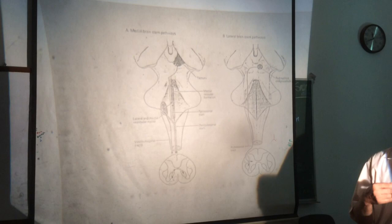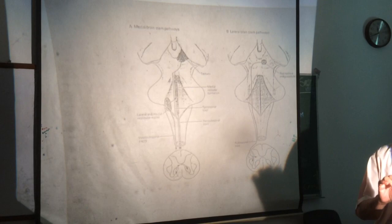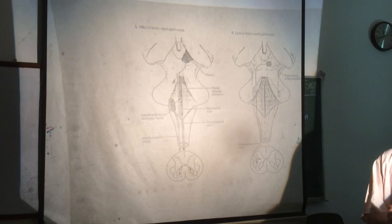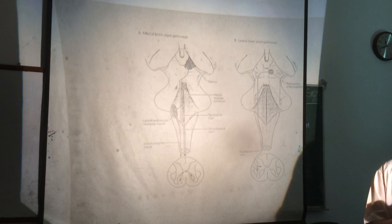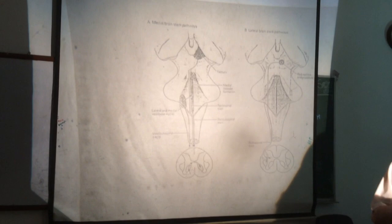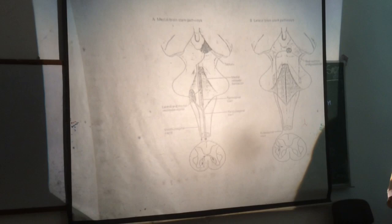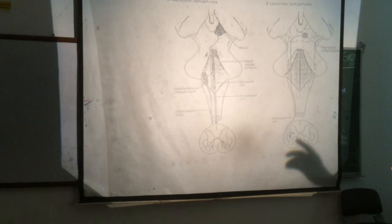We are discussing extra corticospinal or extrapyramidal tracts. Among this group of motor pathways, last time we discussed the rubrospinal tract, tectospinal tract, and reticulospinal tract. Today we begin with the vestibulospinal tract.